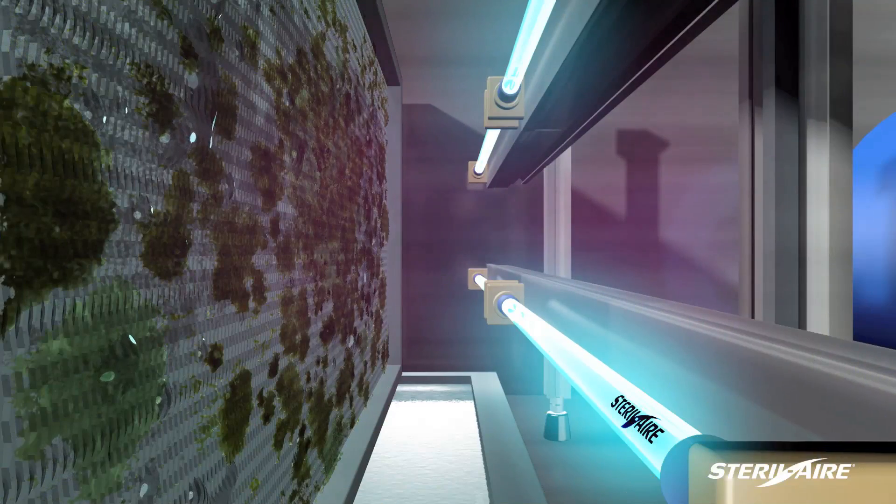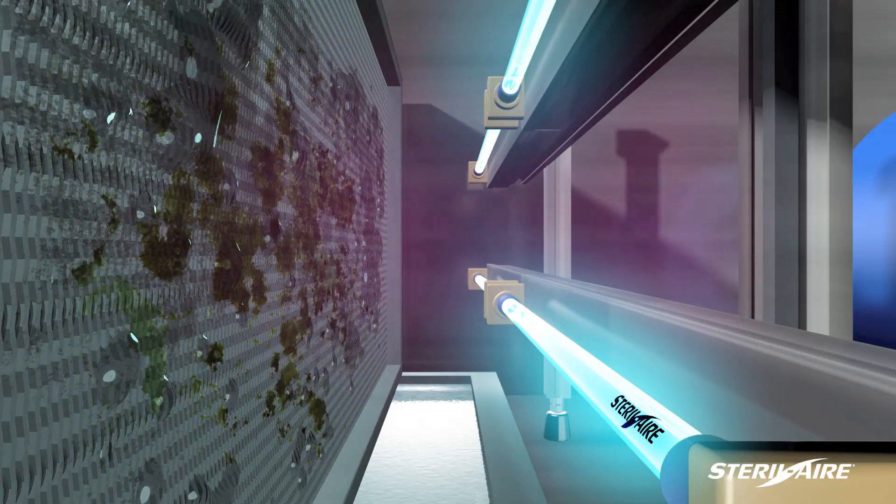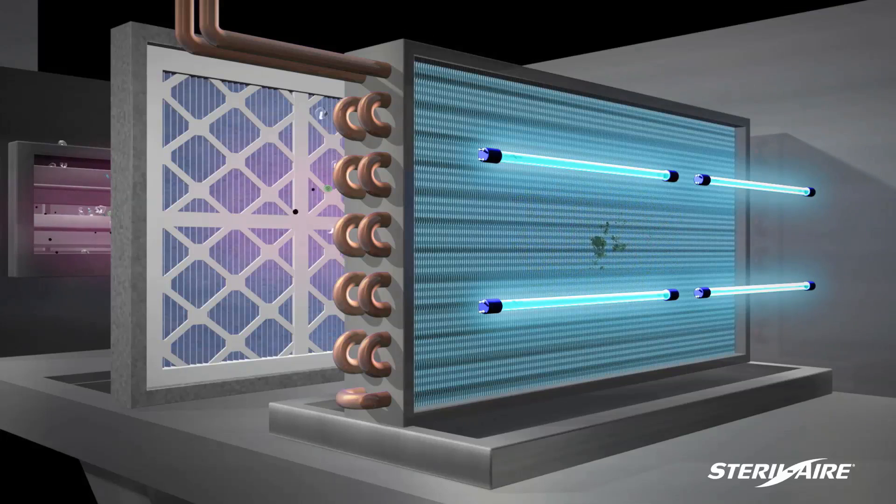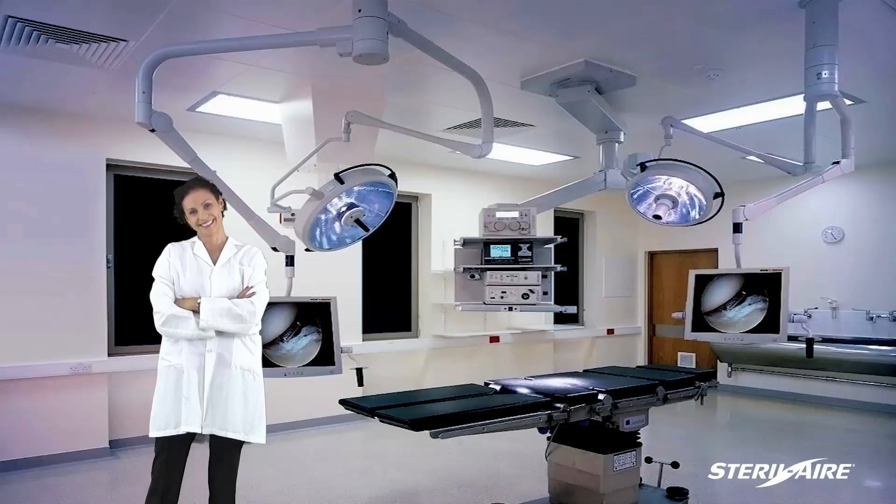When correctly placed by the coil, sterile air's emitters will eliminate more than 99% of the microbes traveling from the AC into the room spaces.